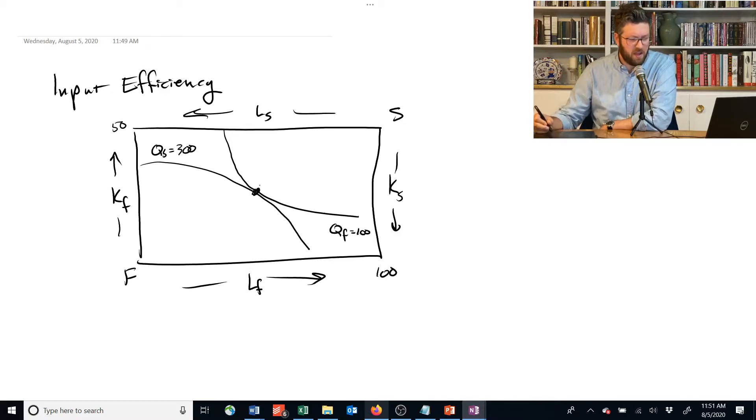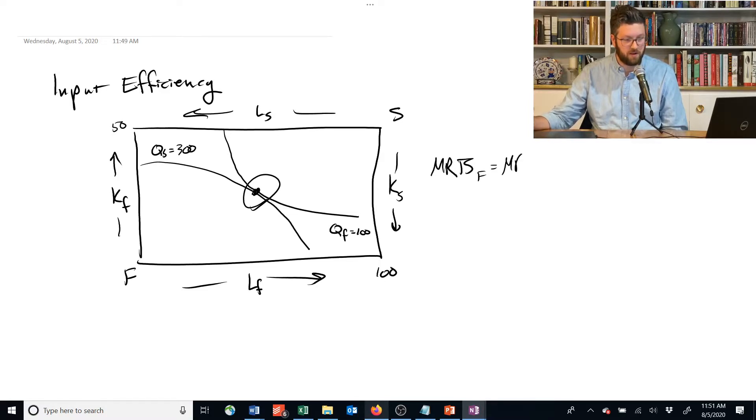And we showed that at an efficient point, the marginal rate of technical substitution for food production was equal to the marginal rate of technical substitution for shelter production.